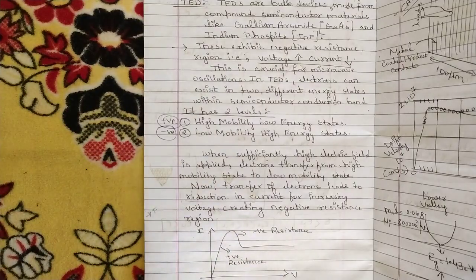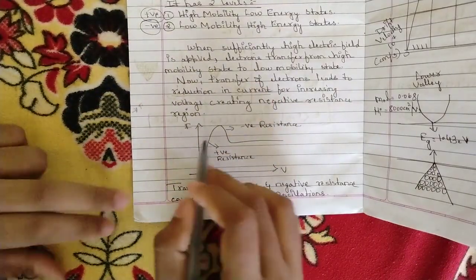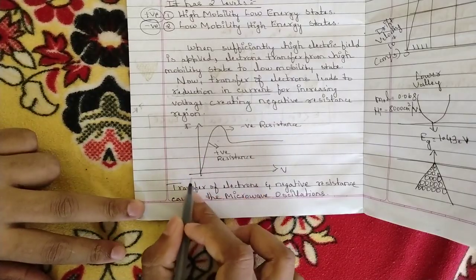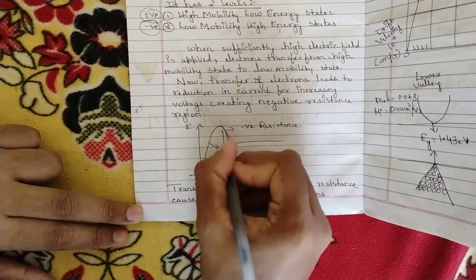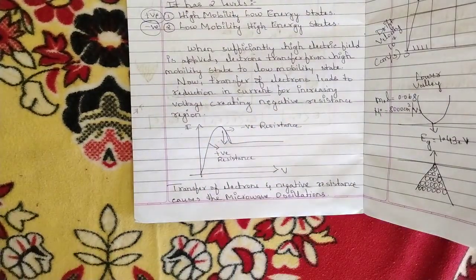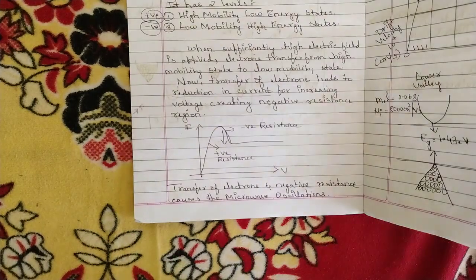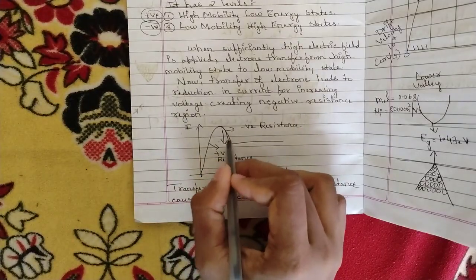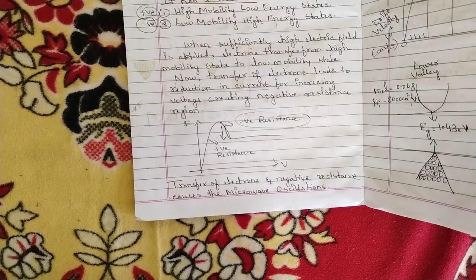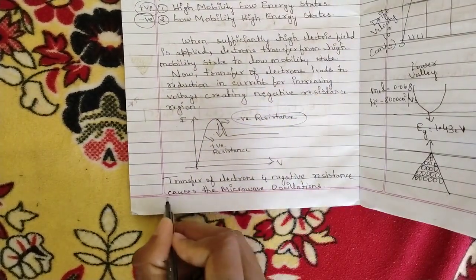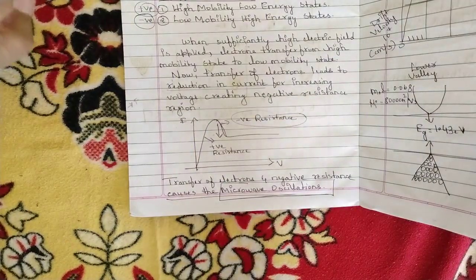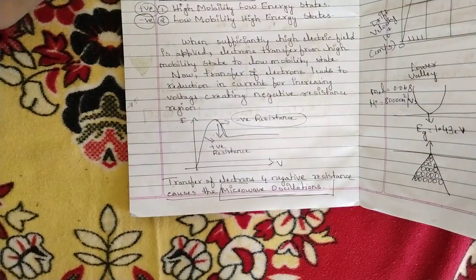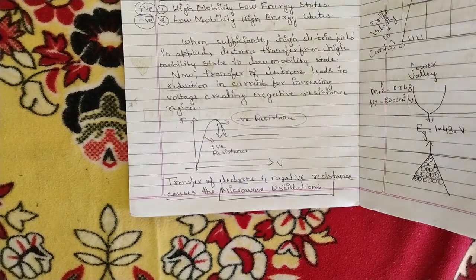This leads to the formation of negative resistance. In the I-V plot, there is first a drastic rise where resistance is positive, then at some point a resistance drop occurs as the signal passes through the Gunn diode. This negative resistance region, along with the transfer of electrons, causes microwave oscillations.